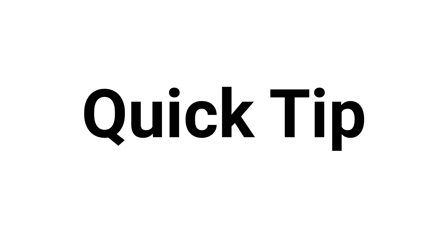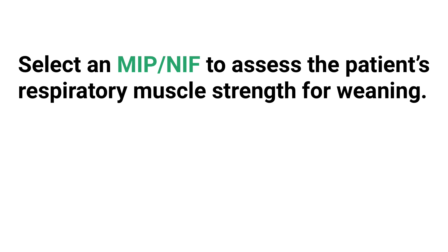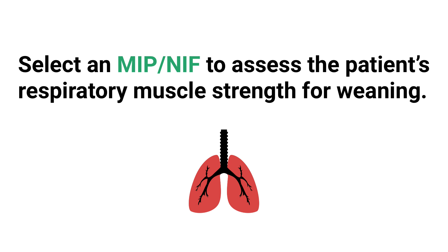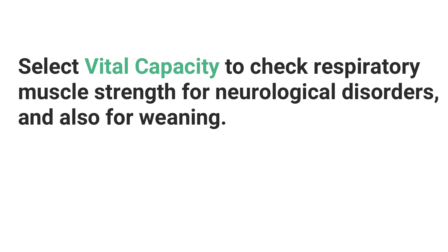Here's a quick tip: you want to select an MIP or NIF — maximum inspiratory pressure or negative inspiratory force — in order to assess the patient's respiratory muscle strength when you want to recommend weaning the patient from mechanical ventilation. And while we're at it, we'll discuss vital capacity. You would also select vital capacity to check the patient's respiratory muscle strength for weaning, and also to check their respiratory muscle strength if they have a neurological disorder.